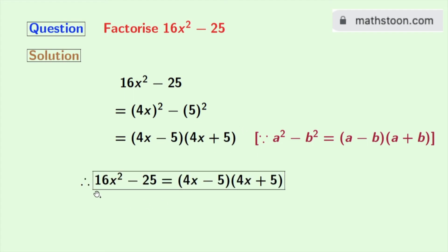Finally, we get 16x² minus 25 equals (4x minus 5) times (4x plus 5), and this is our desired factorization.